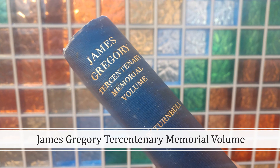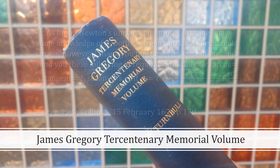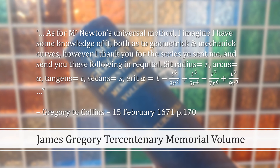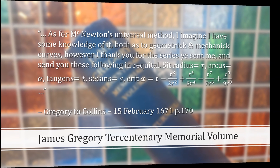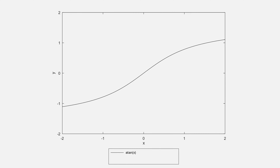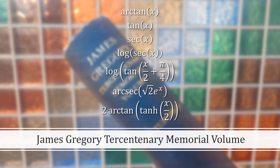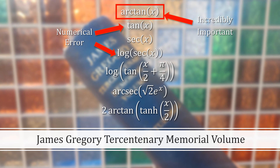Many of Gregory's surviving papers were collated and annotated into a volume by Turnbull. Gregory, in his letter to Collins, writes: "As for Mr. Newton's universal method, I imagine I have some knowledge of it, both as to geometric and mechanic curves. However, I thank you for the series you sent me, and send you these following in requital." What he then gives is the Taylor series for the arctangent. This is a pretty good approximation of the arctangent between negative 1 and positive 1. In that same letter, Gregory sent Collins seven different Taylor series expansions — there were two small numerical errors in two of them, and the arctangent one has been incredibly important, but that deserves its own video.